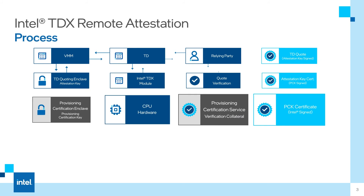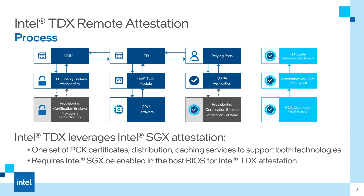The TDX attestation flow derives upon Intel SGX, so this might be familiar. Step one: the relying party triggers the attestation of a TD. Step two: the TD performs a TD call to the Intel TDX module. Steps three and four: the Intel TDX module performs the SEAM report VMCALL to create a signed TD report, including measurements like the TDX module, TD, and other attributes. Step five: the result goes back to the TD through the VMM in step six, which passes it on to the TD quoting enclave in step seven. Steps eight, nine, and ten: the TD quote is passed to the relying party, which performs quote verification by itself or by using a service. That concludes the remote attestation process.